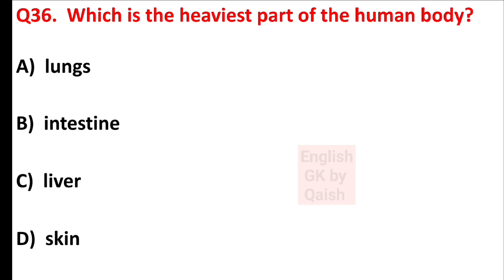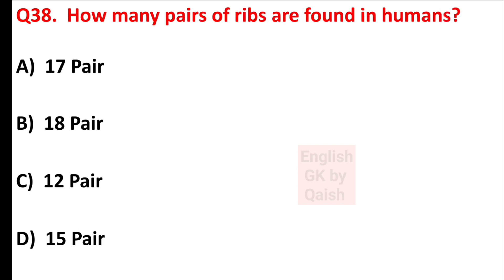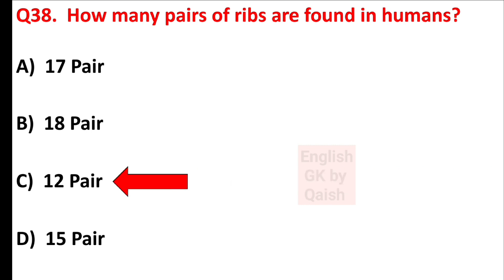Which is the heaviest part of the human body? Answer is option C — liver. What is the normal body temperature? Answer is option A — 98.6 degrees Fahrenheit, or 37 degrees Celsius, or 310 Kelvin. How many pairs of ribs are found in humans? Answer is option C — 12 pairs.